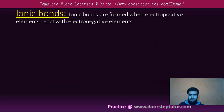We will first look at what ionic bonding is. Ionic bonds are formed when electropositive elements react with electronegative elements.